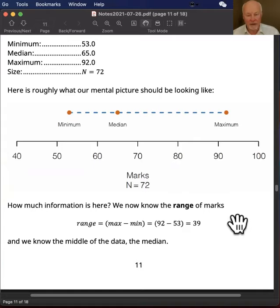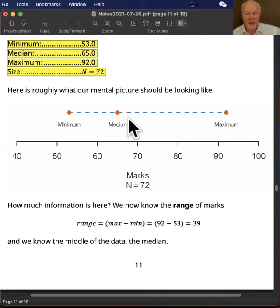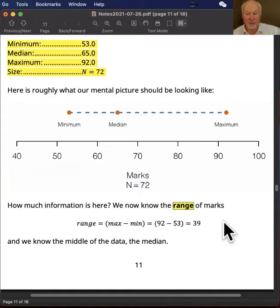Now when we've got these four statistics here - the minimum, median, maximum, and size - just from the minimum and maximum we can calculate what's known as the range of the marks. The range is just the maximum minus the minimum, and that might be of interest to us too. So the range is 39.